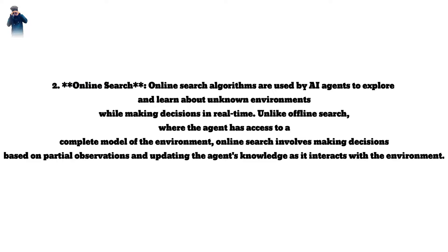Online search algorithms are used by AI agents to explore and learn about unknown environments while making decisions in real time. Unlike offline search, where the agent has access to a complete model of the environment, online search involves making decisions based on partial observations and updating the agent's knowledge as it interacts with the environment.